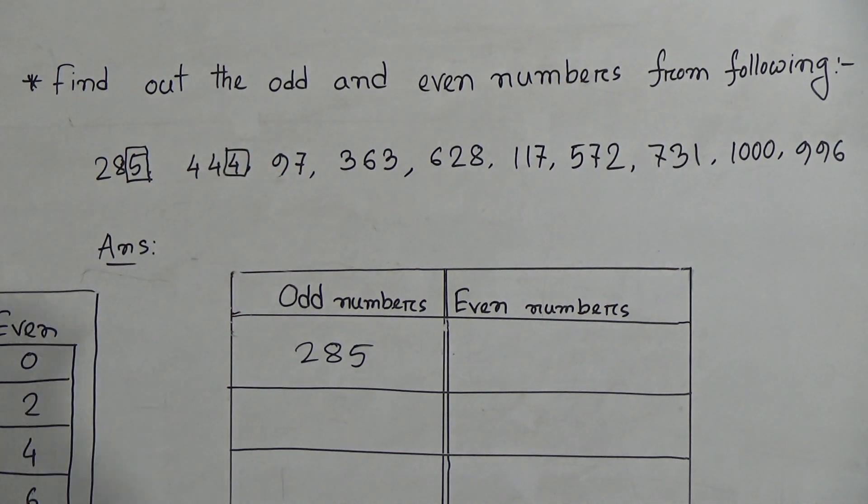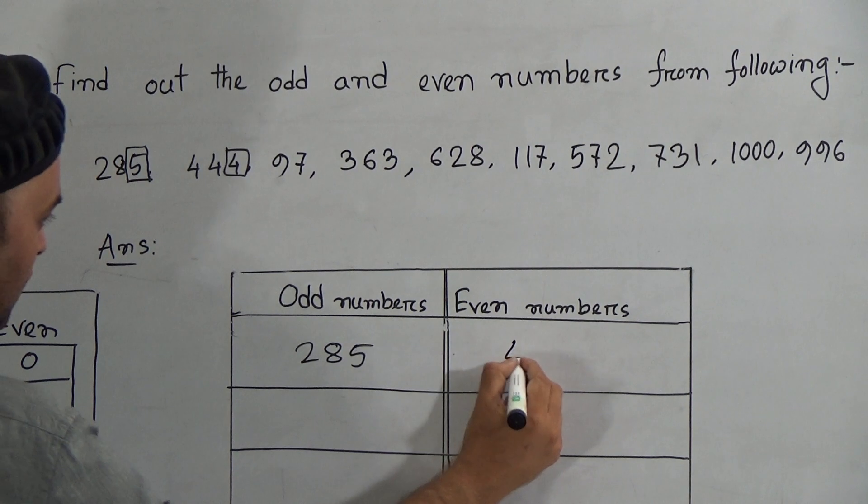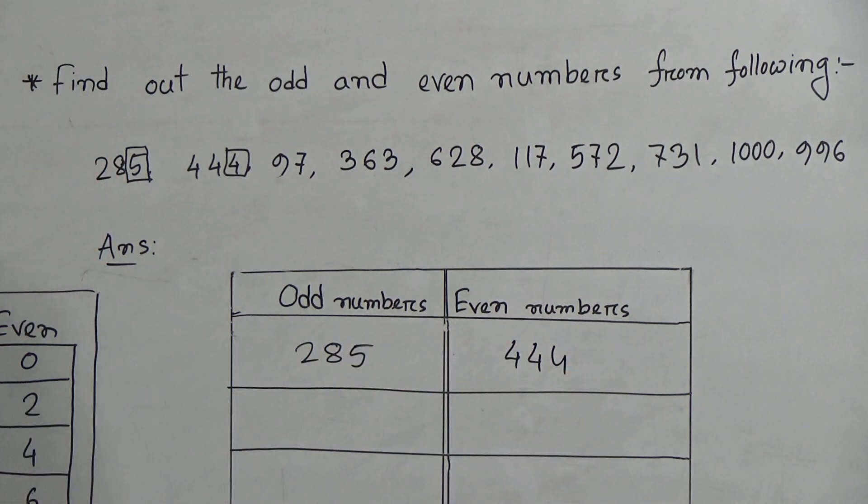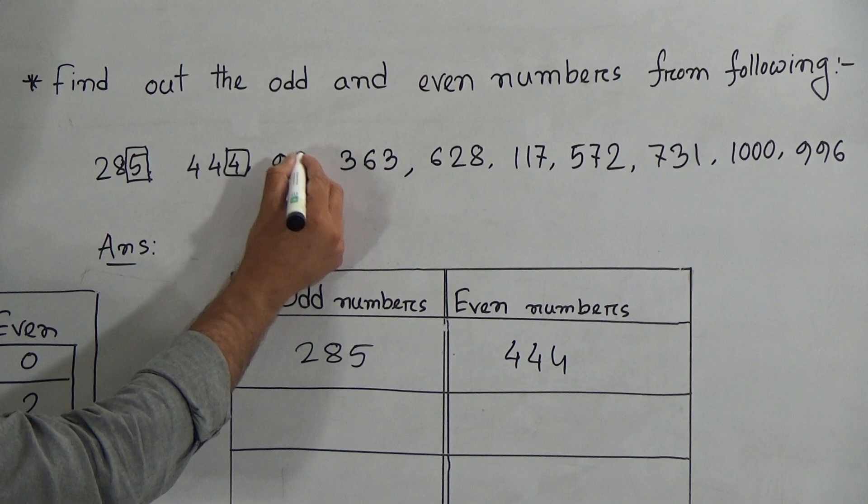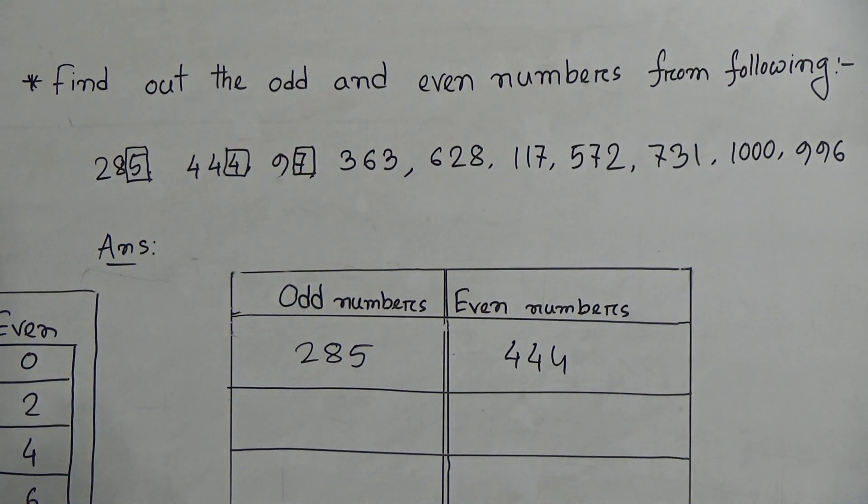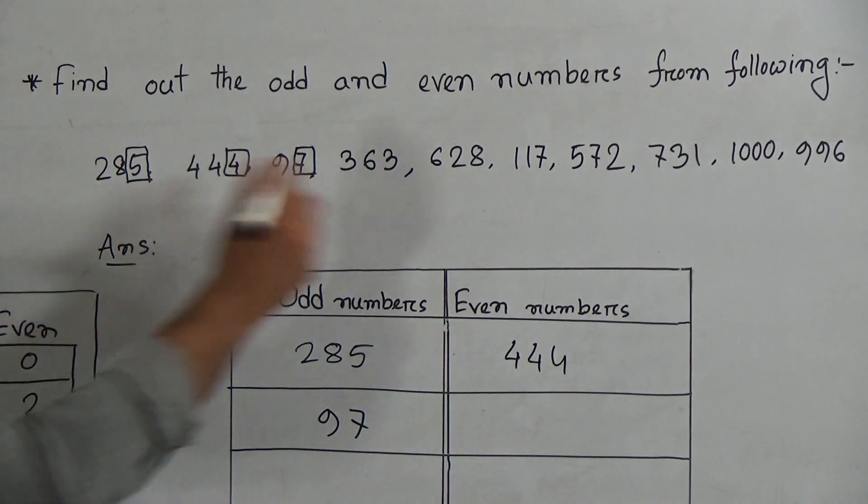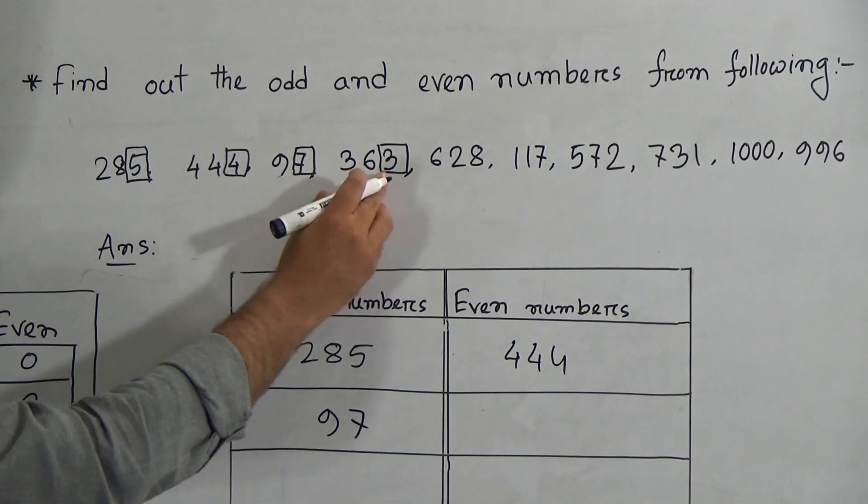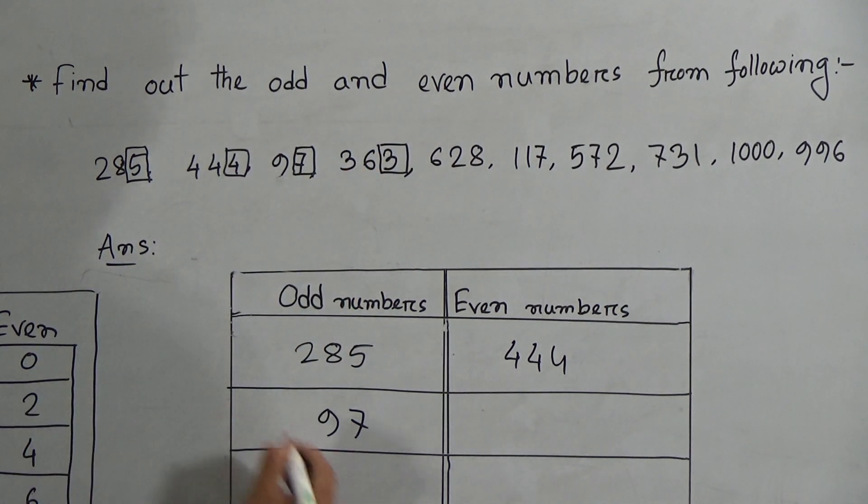444. 4 is the last digit, and 4 is the symbol of even numbers, so 444 will be an even number. Then go to the next one. This is 97. 7 is the last digit, and 7 is the symbol of an odd number, so 97 is an odd number. Then 363. 3 is the last digit, so 363 is also an odd number.